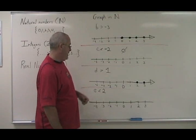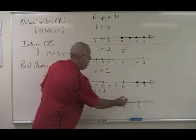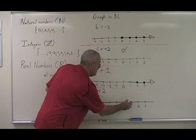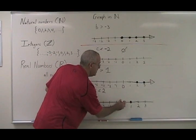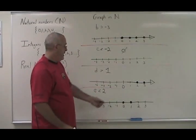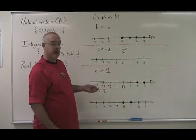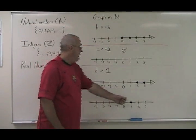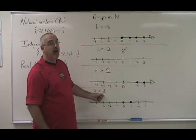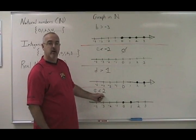E less than two. One is less than two. Zero is less than two. And we have to stop. None of the negative numbers can be included because they're not natural numbers. And two cannot be included because it is not less than two.